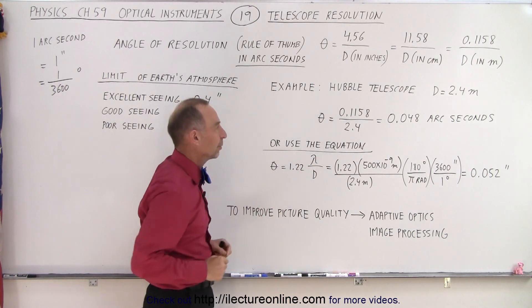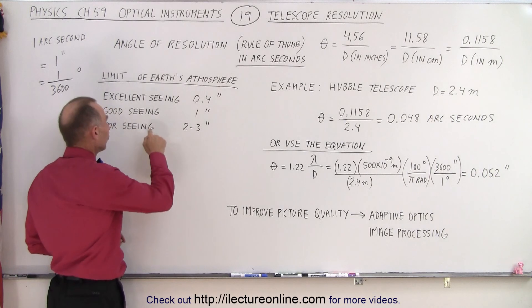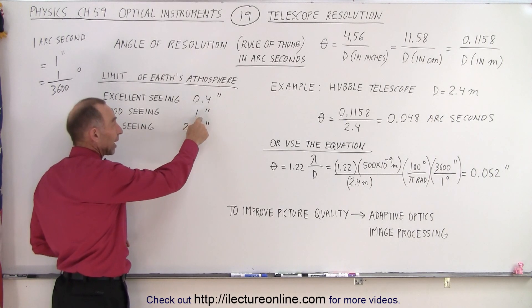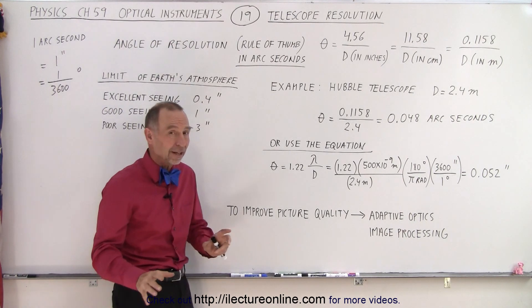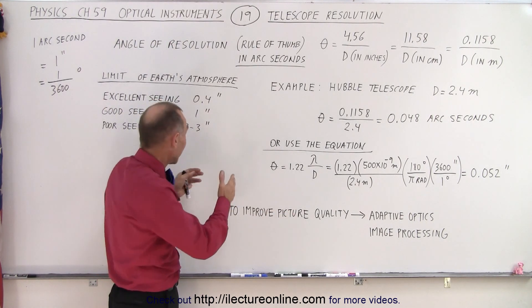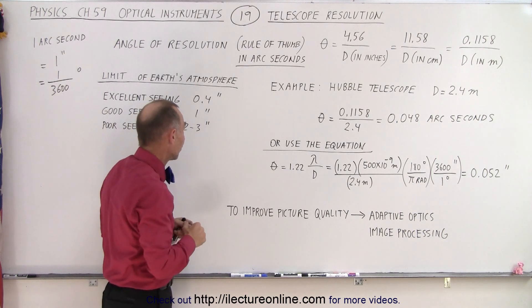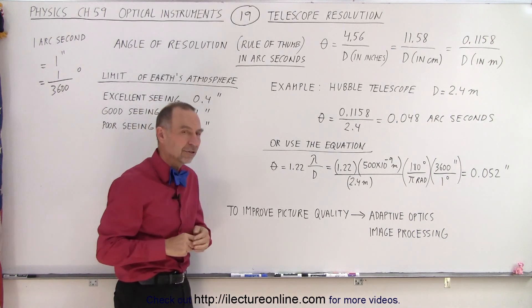For good seeing conditions, it goes down to 1 arc second, and for poor seeing conditions, 2 to 3 arc seconds. So, you can see that really big telescopes don't have a chance on the Earth's surface because of the atmospheric conditions.